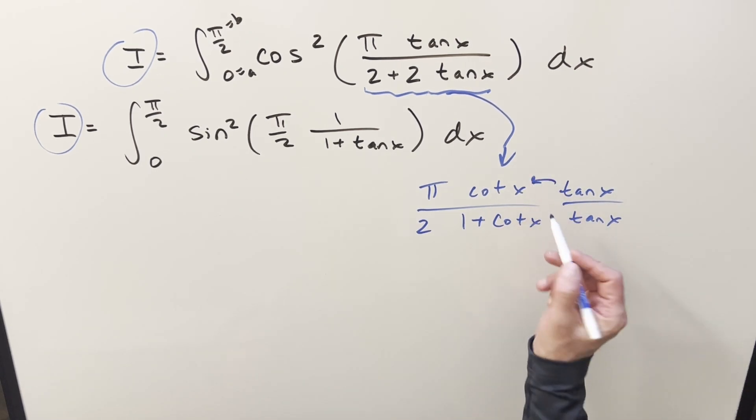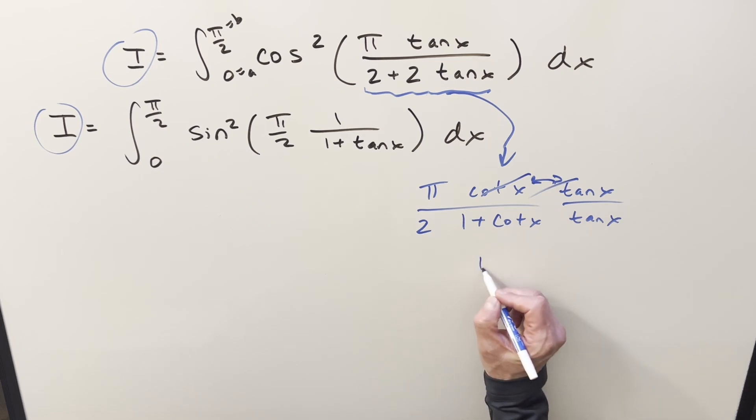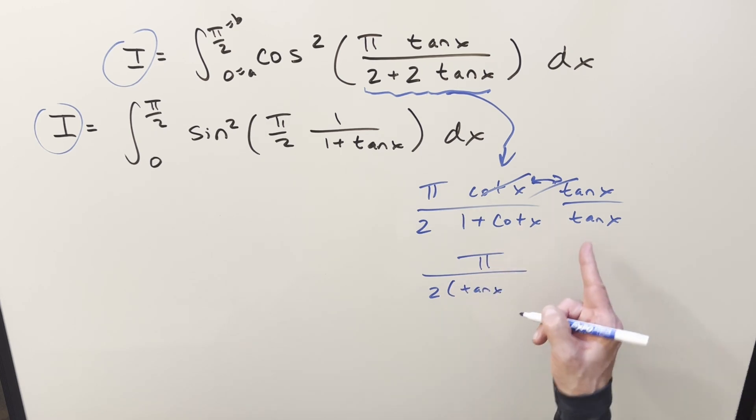Well, when you do that, tan x is just the reciprocal of cotangent x, so that's just going to be a 1. And so simplifying this, we get π/2. Tan x times 1 is going to be tan x. Again, reciprocal is tan x times cotangent x plus 1. So we'll take this, and we'll throw it back into our integral.